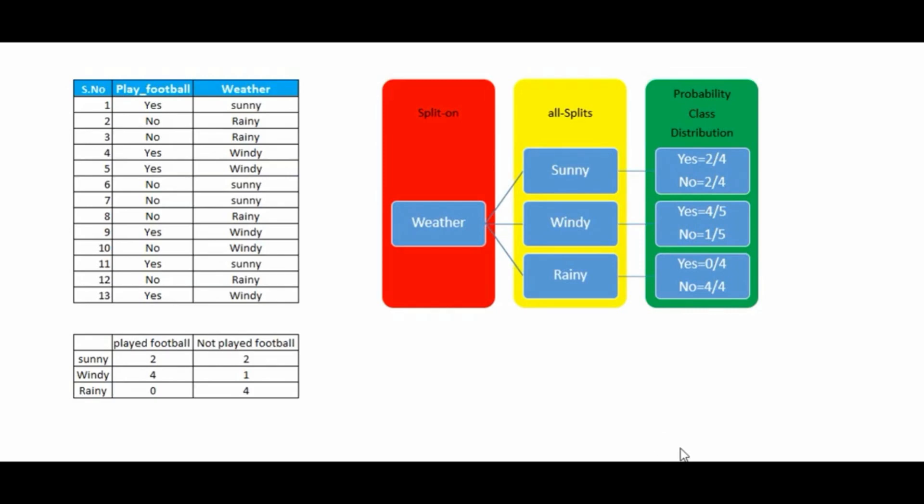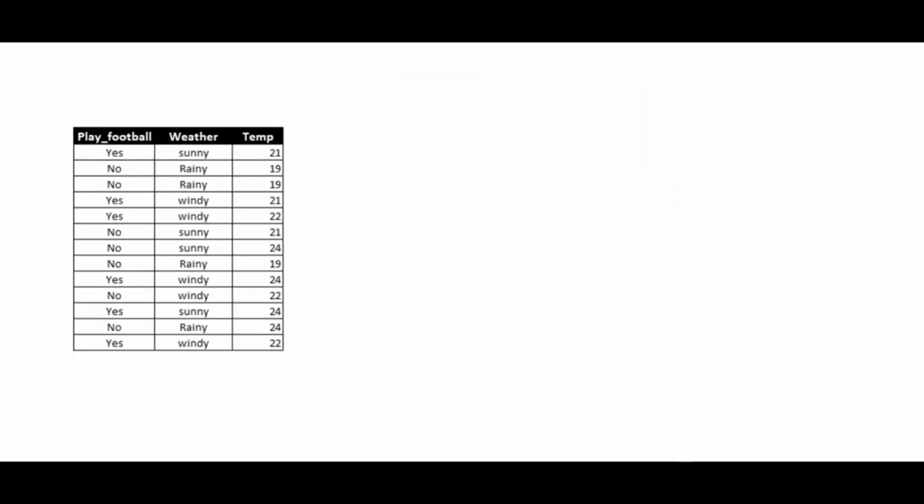We grow our tree until we reach a pure node. In most cases, if I add one more feature — say I also have temperature data for each day — we can make a split on temperature and find out how the person behaved with respect to temperature. But temperature is a numerical variable, unlike weather which is a categorical feature containing categories like sunny, rainy, and windy. So let's understand how to make splits on numerical type features.